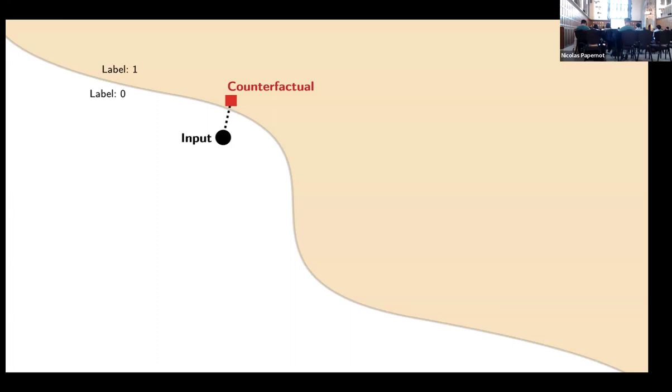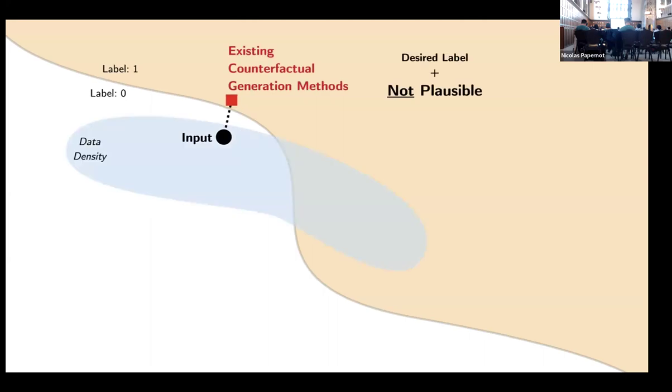Let's try to understand this a bit more. This is a decision boundary with label zero and label one. You have your input in a certain region of label zero, and what you want to do is perturb the input sample minimally in order to make the label different. In this case, you see that the counterfactual being generated is in very close proximity to the input and also it has changed label.